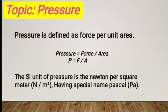The unit of pressure is newton per square meter. This special unit is called Pascal. The symbol for Pascal is Pa. So the SI unit of pressure is Pascal, abbreviated as Pa.